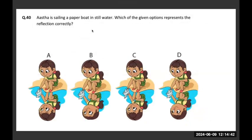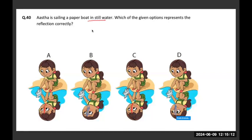Aastha is sailing a paper boat in still water. Which of the given options represents the reflection correctly? If you observe the question figure carefully, there are two kinds of orientations — one is how A and C are happening, and how B and D are happening. A and C are wrong because the angle is different — the question figure's angle is tilted versus the center reflection line.